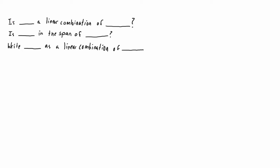Sometimes in a lecture you'll be introduced to just one of these phrasings, and then on a test you'll be asked one of the other things. If you don't know that they're the same, that can become a problem pretty fast. If you ever see questions worded in any of these three ways, the way that we solve it is by writing an augmented matrix with the first vector as the right-hand side and all the other vectors becoming the columns on the other side of the augmented matrix.